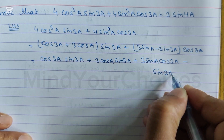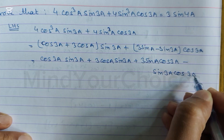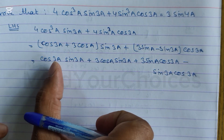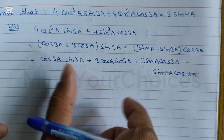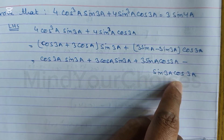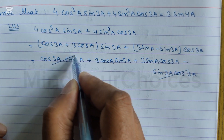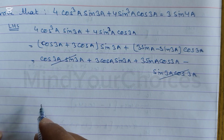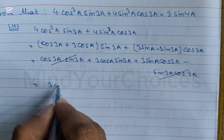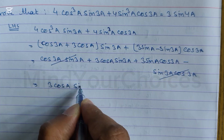Now you can see here sin3a·cos3a appears positive and also negative, so we can cancel them out. After cancellation, what remains is: 3cosa·sin3a plus 3sina·cos3a.